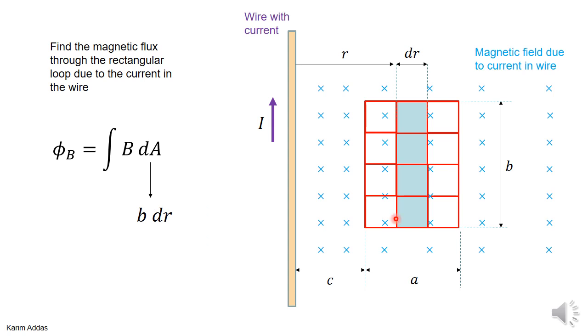And the area of this rectangle is b times this width. So this width—we're going to say that the distance, the perpendicular distance between the wire and any point is r. That means this distance is just dr. So that means that the area of this rectangle is b times dr.